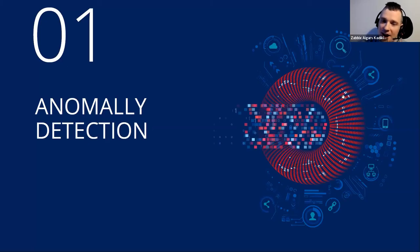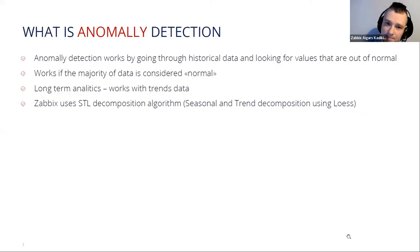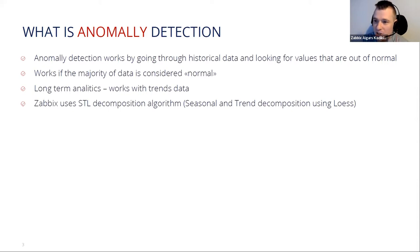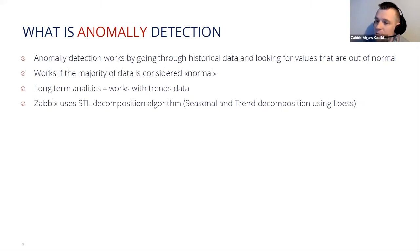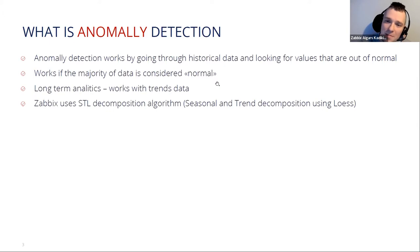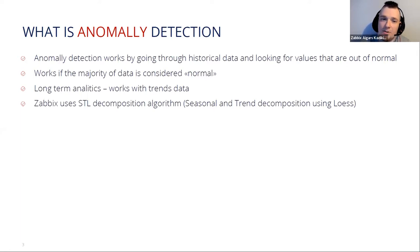The first topic is anomaly detection. Anomaly detection works by going through the historical data and looking for values which are kind of off — out of the normal. In order to succeed with this detection method, we need to have normal graphs all the time. The keyword 'normal' is in double quotes — graphs will usually contain some pattern, like on Mondays the memory usage may be bigger. That pattern is considered as normal, and if you shift from the pattern, that's an anomaly.